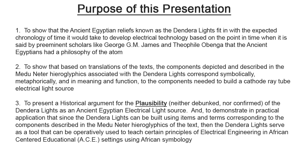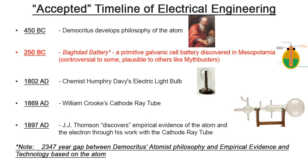We want to present a timeline of electrical engineering. The accepted timeline begins in 450 BC with Democritus' philosophy of the atom. Then, controversially, in 250 BC, there is the Baghdad battery. Some people believe it was an ancient primitive battery developed in Mesopotamia, whereas others believe it was just a pot used for storing scrolls. However, popular science shows like Mythbusters have declared the Baghdad battery as plausible.